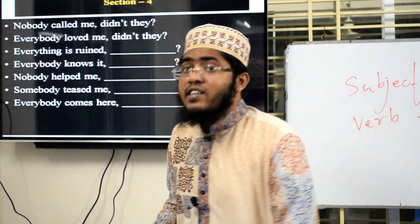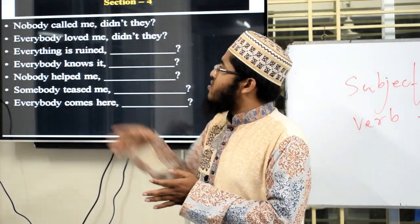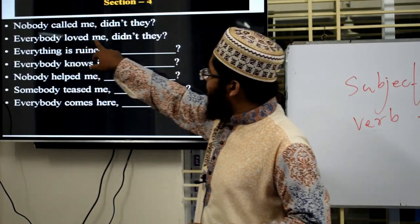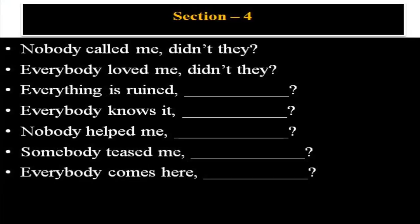Now solve these sentences applying rule 4. Notice: 'Nobody called me' — 'nobody' is negative, so the tag should be positive interrogative: 'did they?' 'Everybody loved me — didn't they?' Now solve: 'Everything is ruined'; 'Everybody knows it'; 'Nobody helped me'; 'Somebody teased me'; 'Everybody comes here.' Remember: if the subject word is negative like 'nobody', the tag becomes positive interrogative.